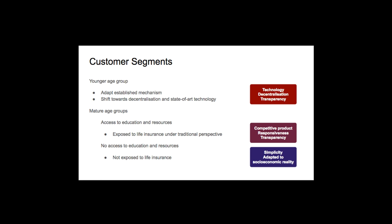In terms of customer segments, our research concludes that the younger age group of societies seem not to proceed until final underwriting of life insurance policies. But we know these individuals are looking to adapt long-established mechanisms and shift towards decentralized solutions based on state-of-art technology. This group represents our first customer segment to which we intend to gain through technology, decentralization and transparent proposition.